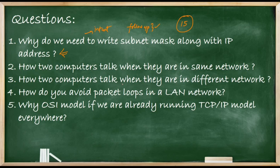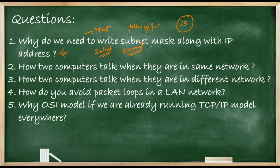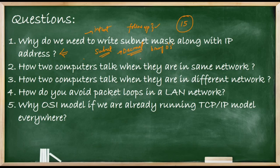Our first question — why do we need to write subnet mask along with the IP address — requires a complete understanding of IP subnetting. IP subnetting is one of the most important and easy concepts in networking, but most people don't know it well. The reason is that in daily life we calculate everything in the decimal number system, but here we calculate networks based on the binary number system — zeros and ones. You can explain IP subnetting better when you understand and start thinking about it in decimal instead of binary, and that is exactly what we are going to do.